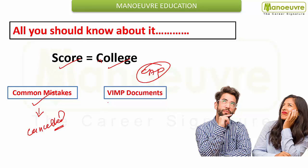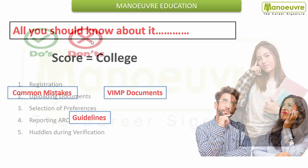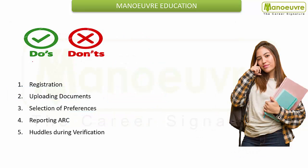So what are the common mistakes? The very important thing is documents — if you have them, keep them safe, and if you don't, know how to apply for them. Also know the important guidelines by the CET cell, and the exact do's and don'ts to avoid common mistakes during the registration process.